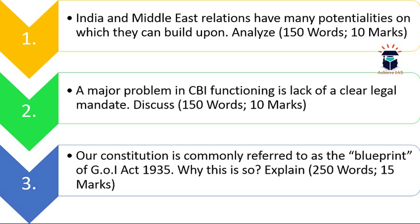The third question is from the static portion. It is: 'Our Constitution is commonly referred to as the blueprint of the Government of India Act 1935 — why is this so? Explain.' You have to explain why it is called the blueprint of the Government of India Act 1935. The word limit is 250 and the maximum marks are 15.